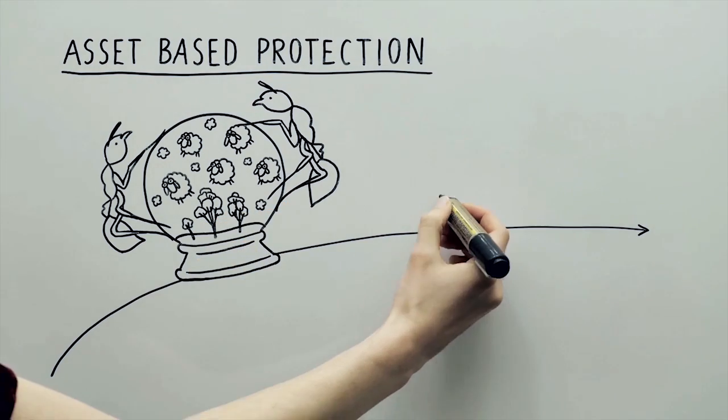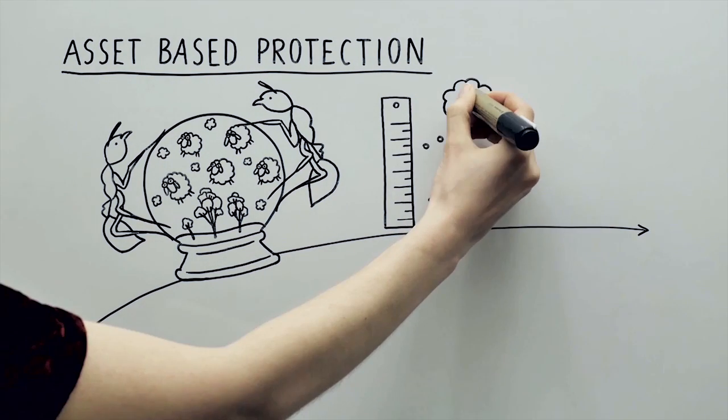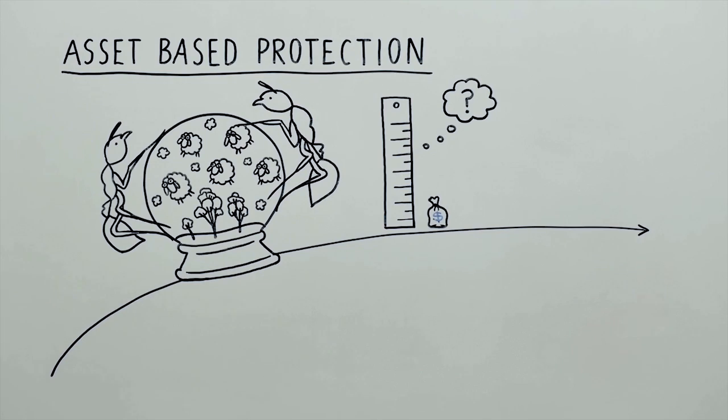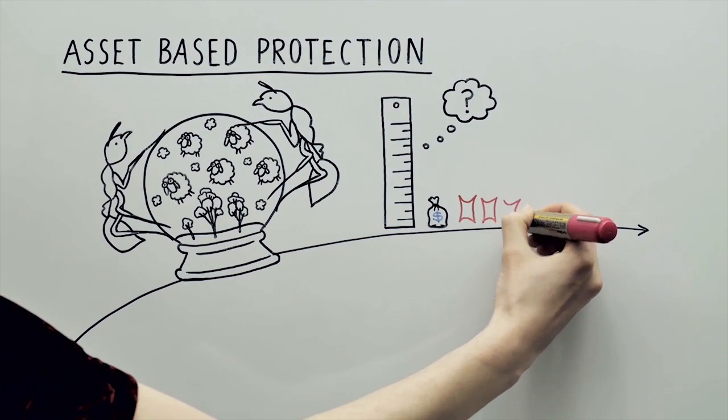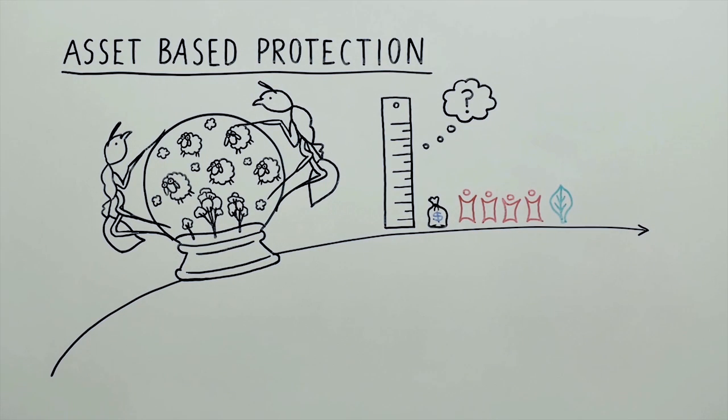Typically, the return on this investment is low. However, this can be difficult to measure. For example, how do we put a price on the value of saving a native species from extinction? The economic, social and environmental benefits of asset-based protection can be far-reaching.